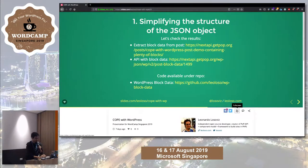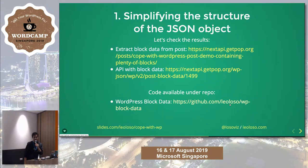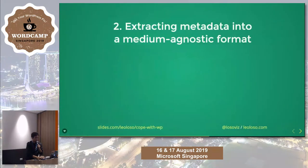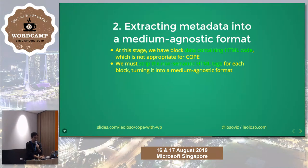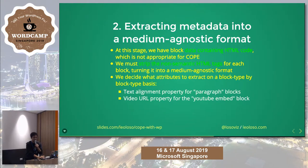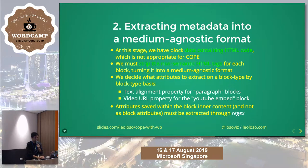All the code I didn't show for lack of time is available on a GitHub repo I created for this presentation. Once again, check the slide URL to access all the code. The second step: now that we have the initial data from the blocks, we need to transform it into something medium-agnostic that we can use for any device. We have data that contains HTML code, which as we said is not suitable for the Create Once Publish Everywhere strategy. So we must strip the non-semantic HTML tags for each block, turning them into a medium-agnostic format.